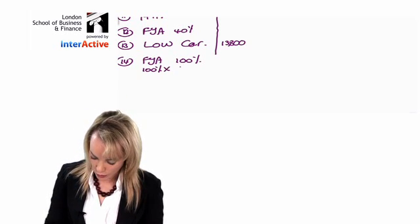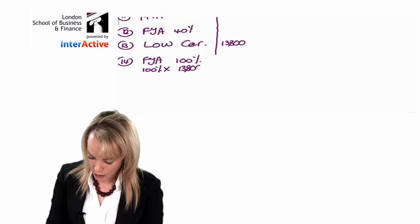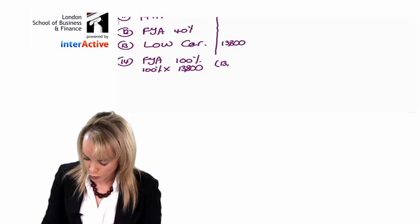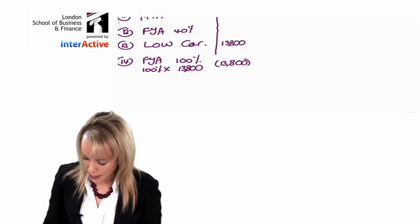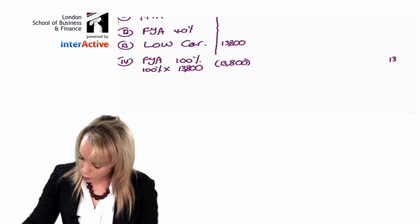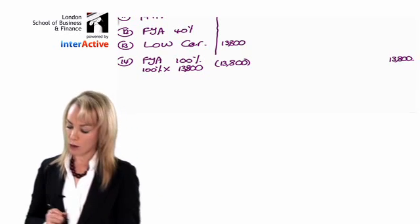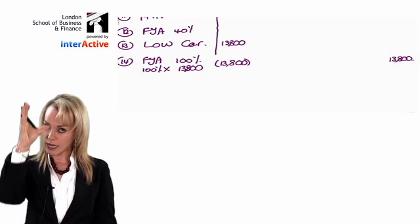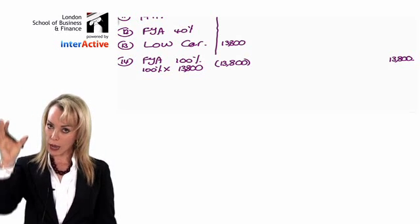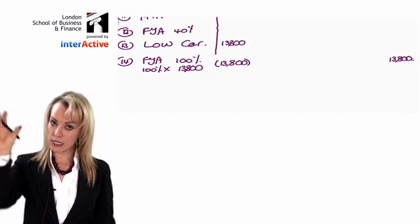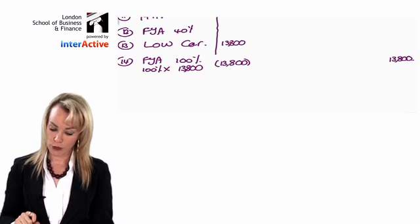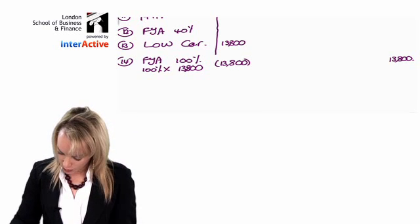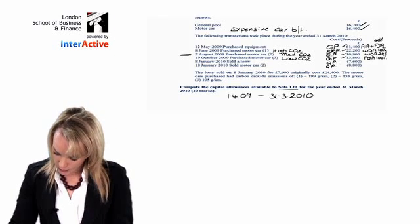I might as well do that while I'm here. For low emission cars you get 100%, so you put that as a negative figure there, and then into this right hand column you put your first year allowance. All your capital allowances are aggregated in that right hand column.